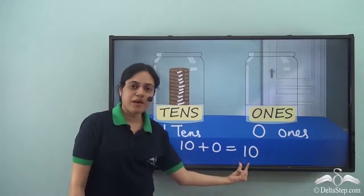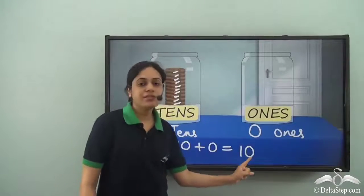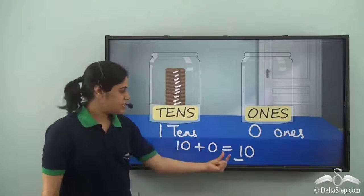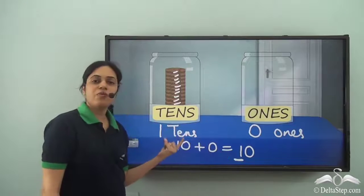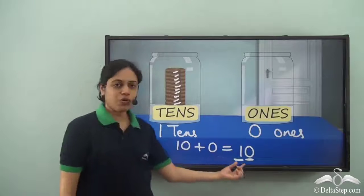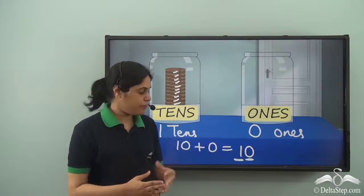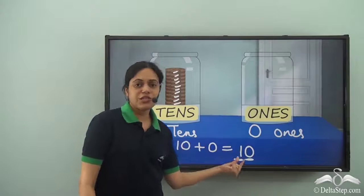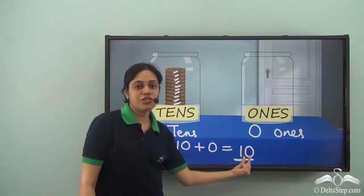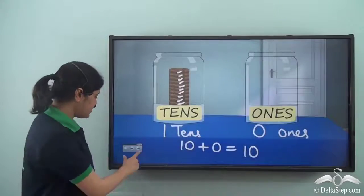This is how we represent the number ten. When we write ten — that is 1, 0 — the first digit, which is one, stands for the tens place, meaning one tens. And the second digit, which is zero, stands for the ones place. So whenever we write a two-digit number, the first digit stands for the tens place, and the second digit — the digit to the right — stands for the ones place.